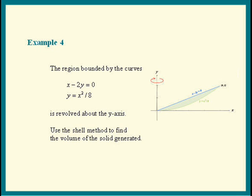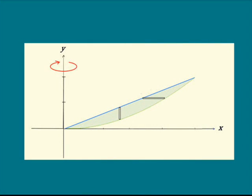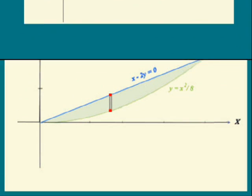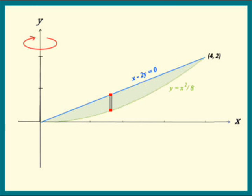The first thing we have to decide is how to slice the region in order to obtain shells. I hope it's pretty obvious to you that we need to slice it vertically. So here's one of the vertical strips. How thick is this strip? It's a little piece of x, dx.